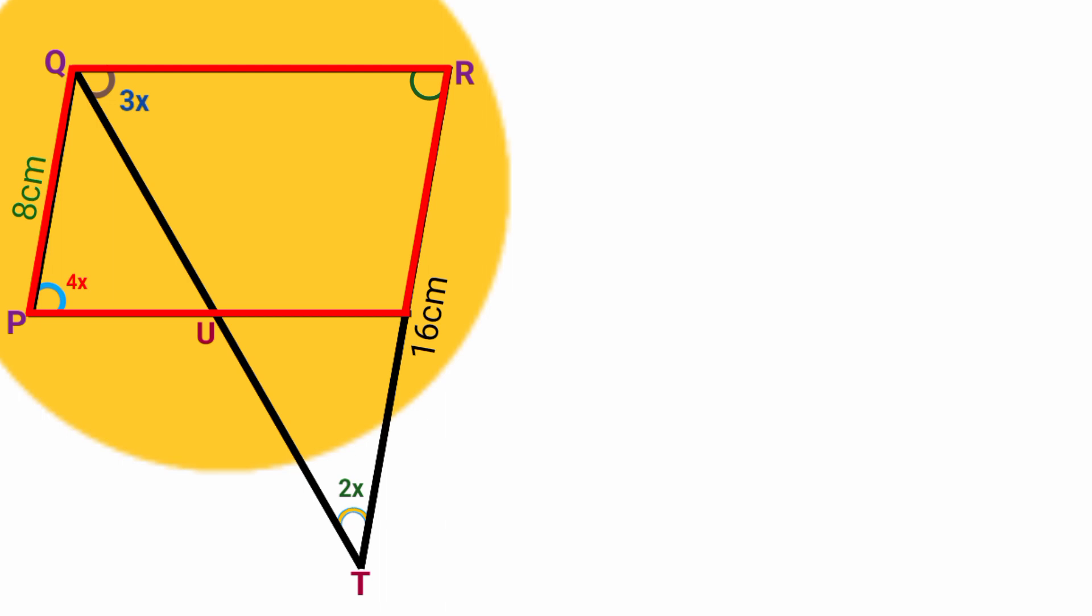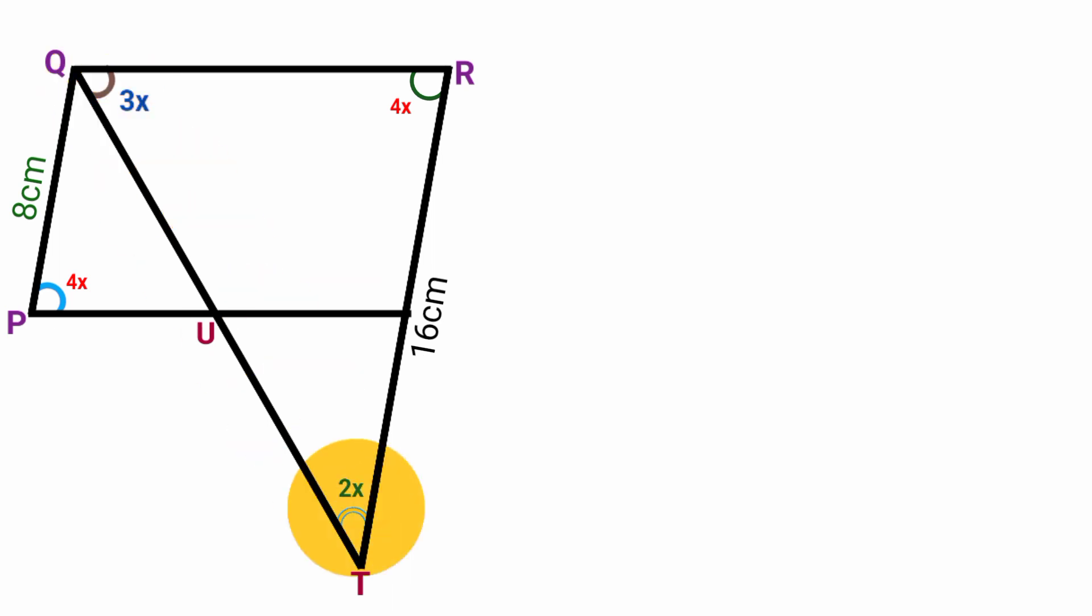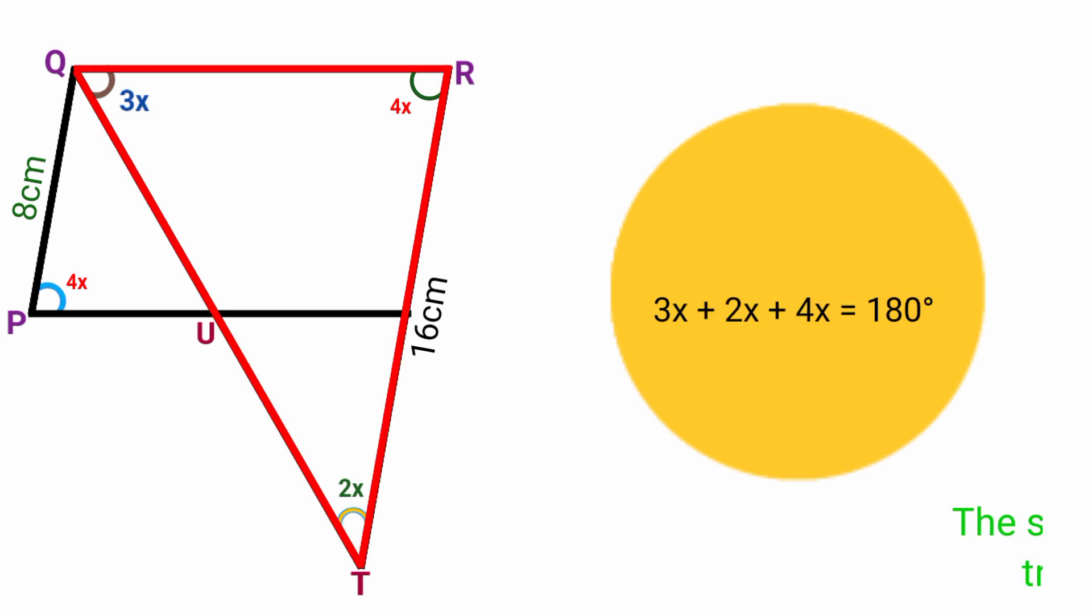If you recall, since PQRS is a parallelogram, opposite angles are also equal. If you look here, this angle is opposite to this here, and hence this also equals 4x. So now since this is 3x, this is 2x, and this is 4x, we can form an equation.